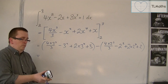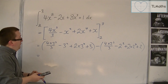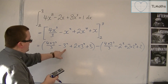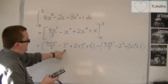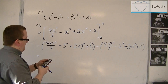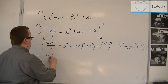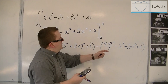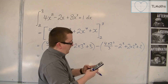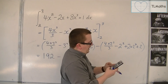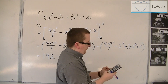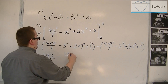Remember, we have a calculator that we can use. So we've got 4 lots of 27 divided by 3 there, so that's 36. Take away 9, plus 2 lots of 3 to the 4, plus 3 — so that gets me 192 for the first bracket. And then over here, we've got 4 times 8 divided by 3, take away 4, plus 2 lots of 2 to the 4, and then plus 2 — so that's 122 over 3.